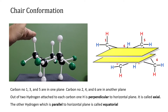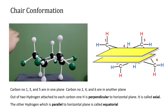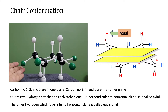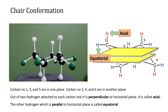Now look at the hydrogens attached to each carbon. For carbon number one, two hydrogens are attached. The hydrogen that is perpendicular to the horizontal plane of the carbon ring is called an axial hydrogen, whereas the one that is parallel to the plane is called an equatorial hydrogen.